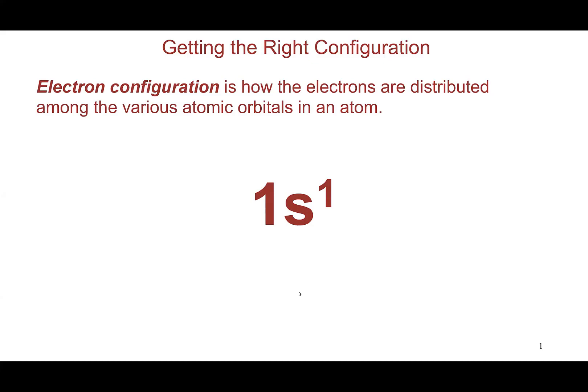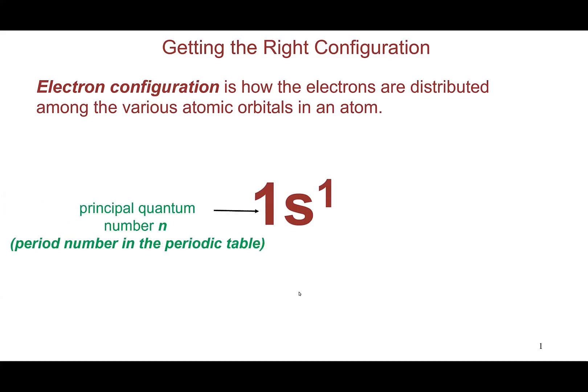The orbital notation looks like this: the coefficient corresponds to the principal quantum number n, which determines the energy level to which that orbital belongs, and it corresponds to the period number in the periodic table. The letter symbol is determined by the value of the secondary quantum number L, which determines different types of orbitals. When L equals 0, that's an s orbital; when L equals 1, that's a p orbital; when L equals 2, that's a d orbital, and so on.